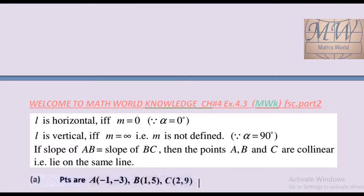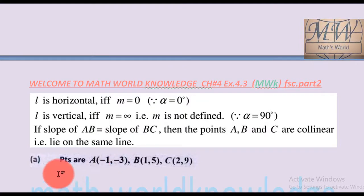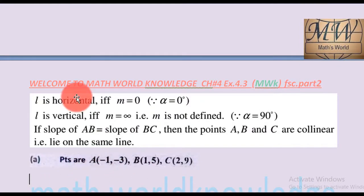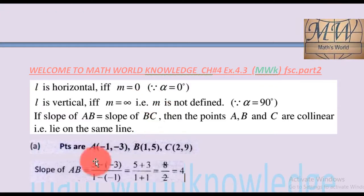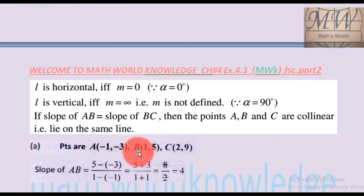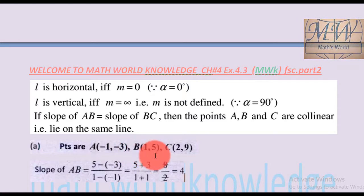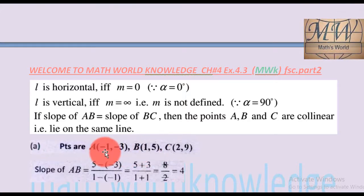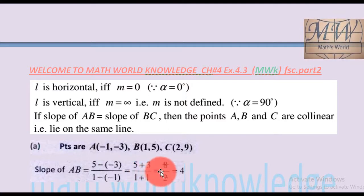Here is Question part (a). Points A, B, C are given. Now find the slope of AB using the formula: slope = (y2 - y1) / (x2 - x1), where A is (x1, y1) and B is (x2, y2). So slope of AB = (5 - (-3)) / (1 - (-1)) = (5 + 3) / 2 = 8/2 = 4. Slope of AB is equal to 4.